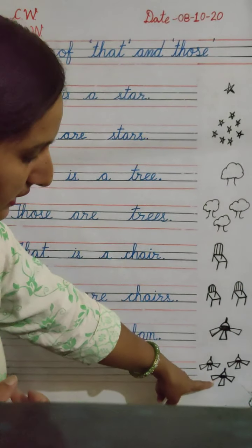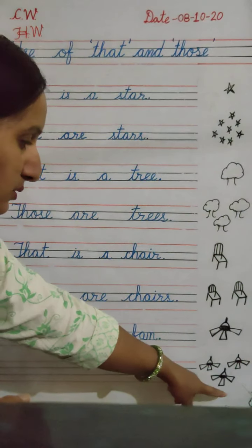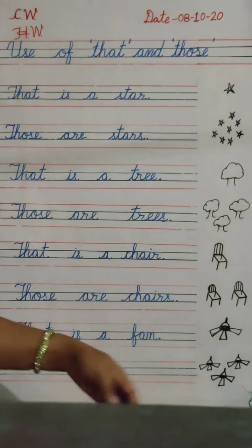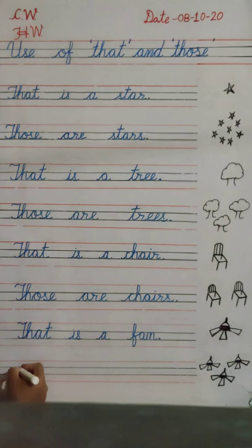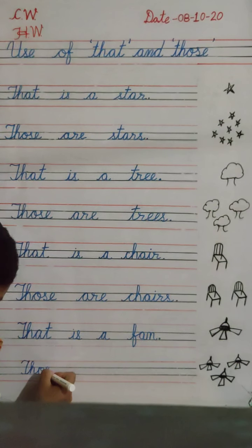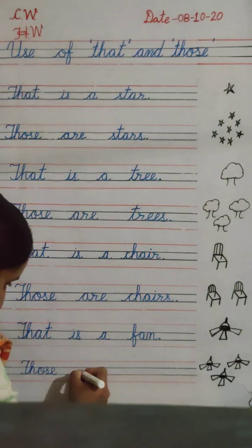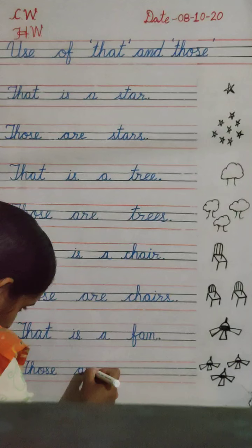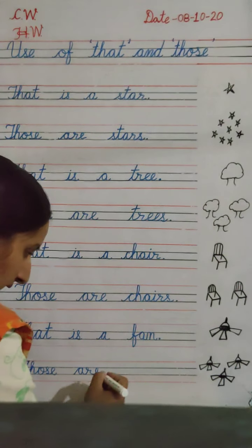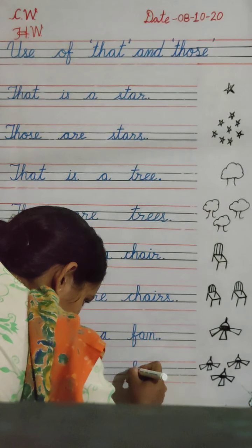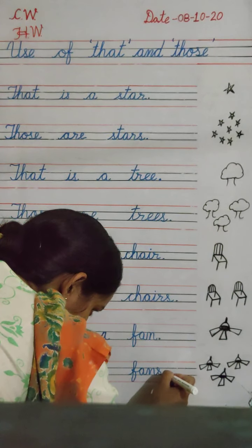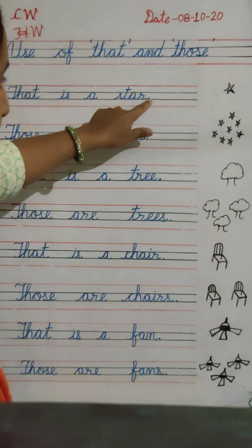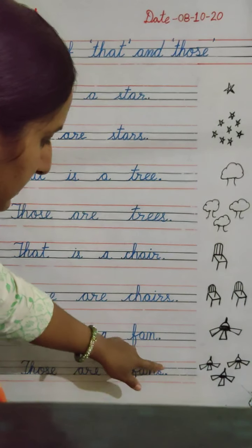And now, next picture. Look there — there are many fans. So we will use 'those'. Fans are many, then we will use 'those' for many. What are those? Those are fans. T-H-O-S-E. Those are fans. F-A-N-S — fans. Full stop. After completing the sentence, you are to put a full stop. It is compulsory.